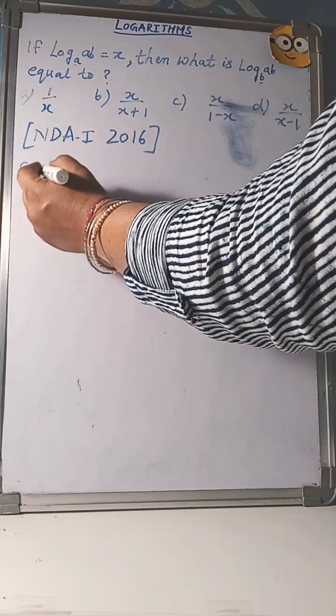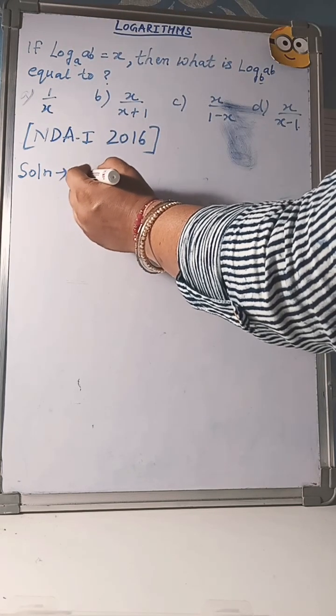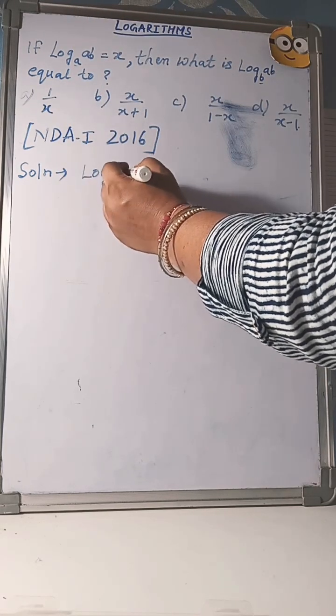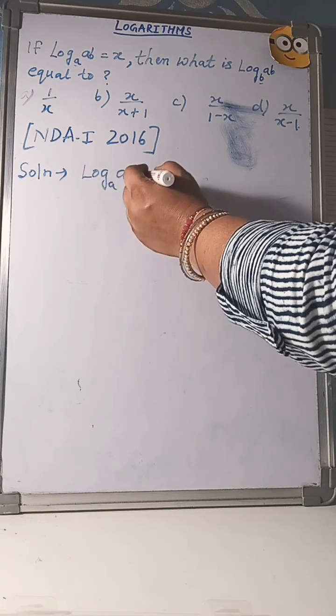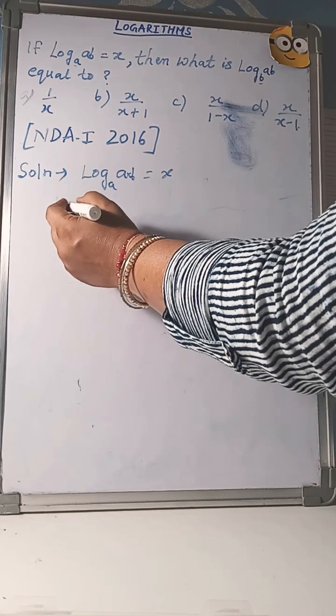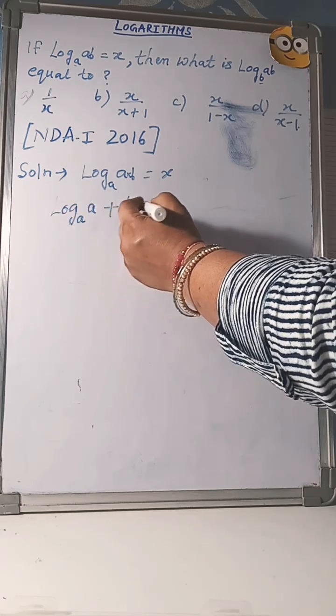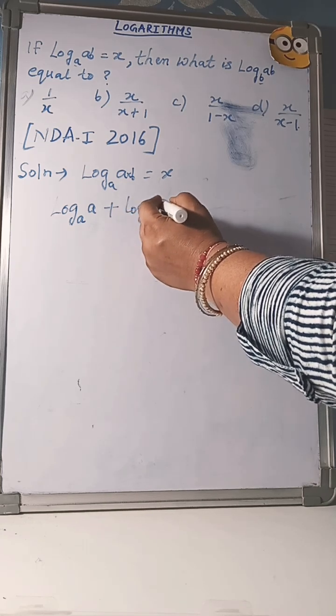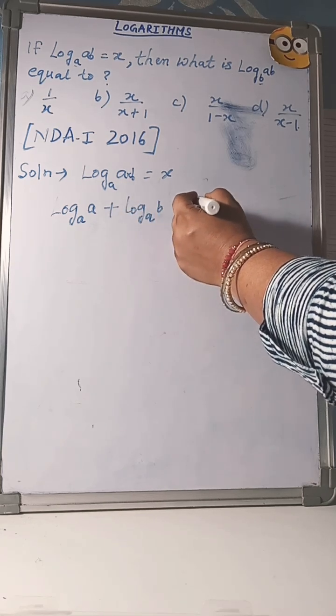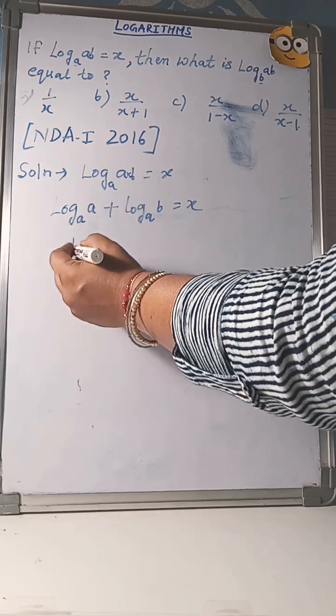Here's the solution. Log AB to the base A equals x. Now using product law of logarithm, log base A of A plus log base A of B equals x. And you know if base is same then value is 1.